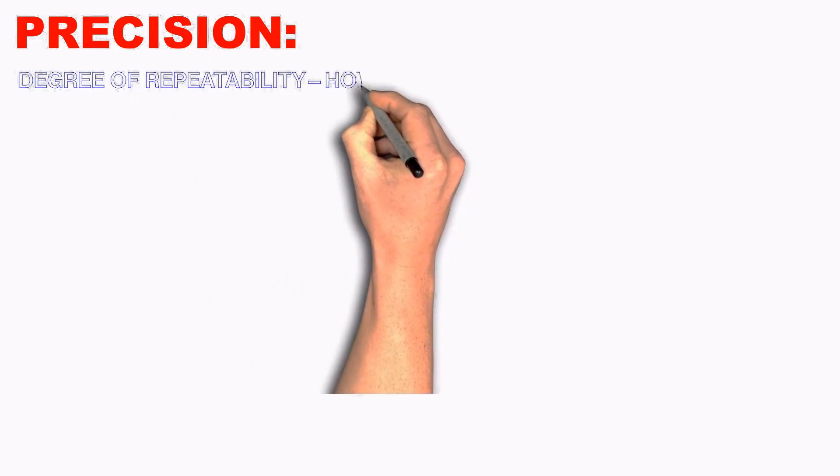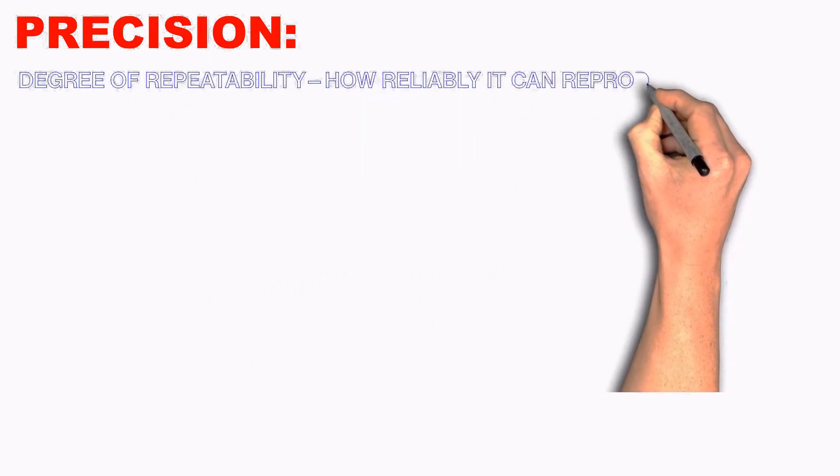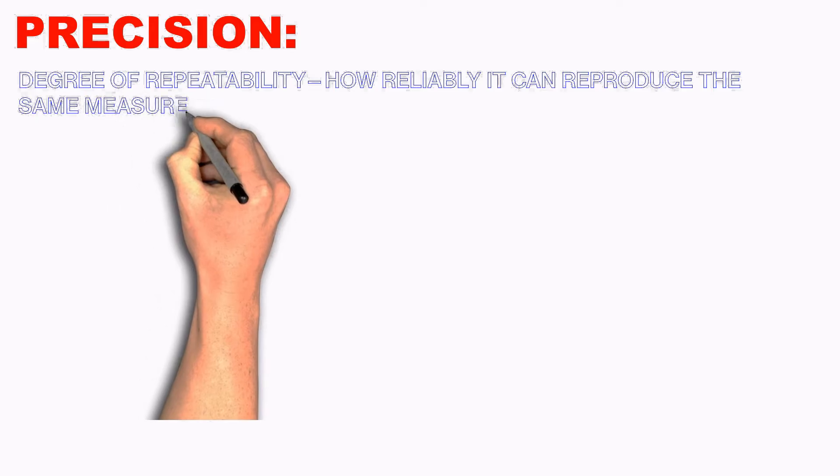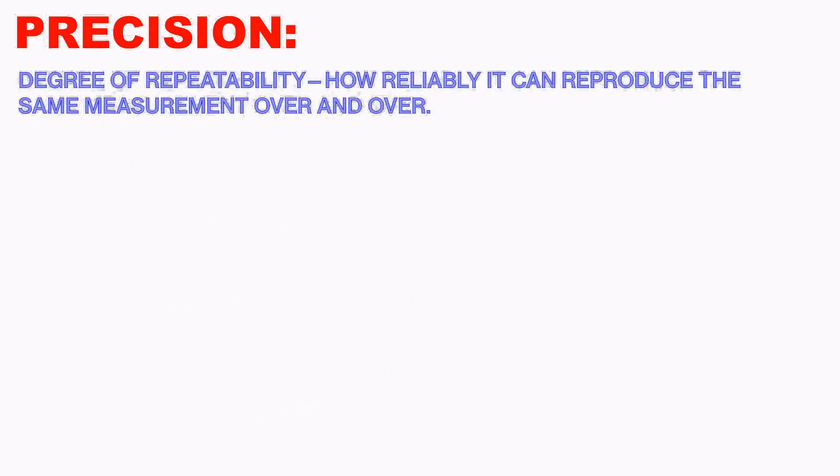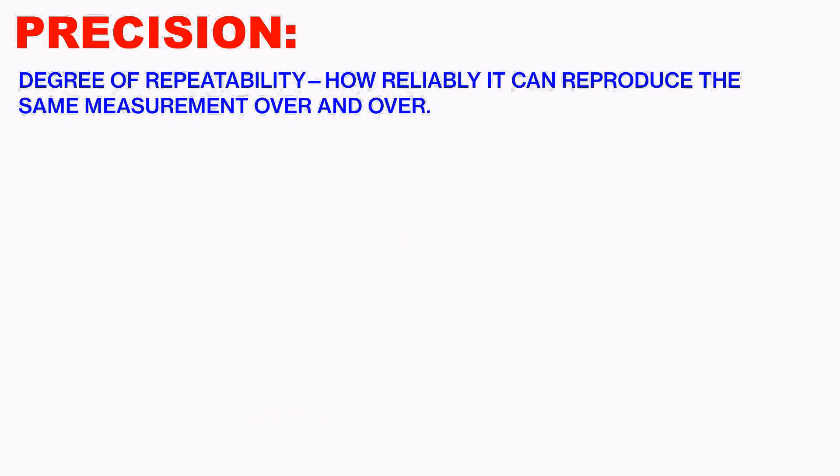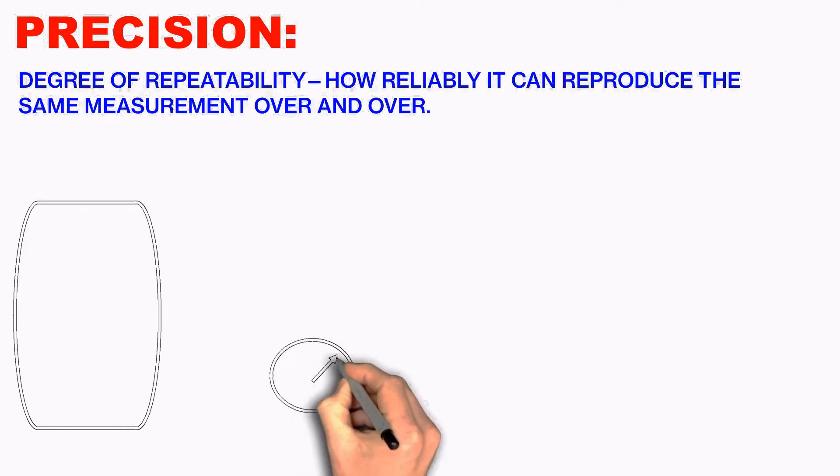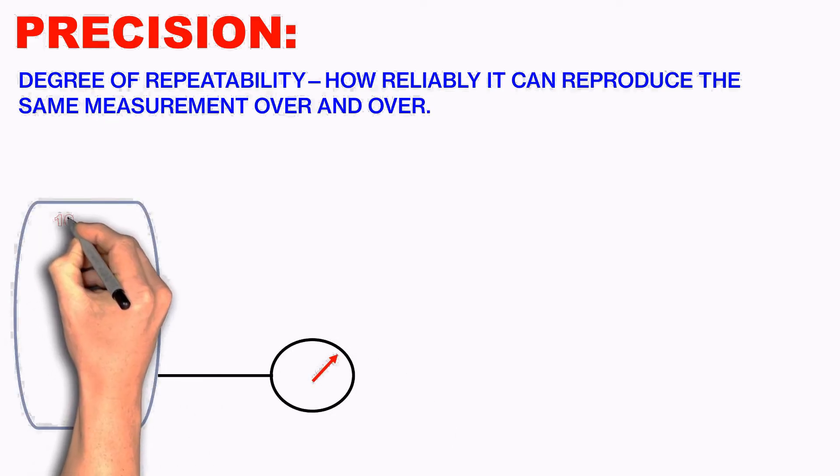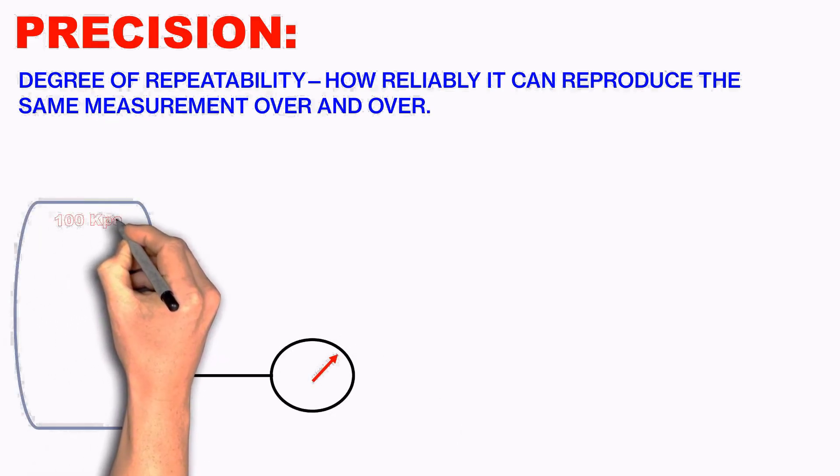So what is basically precision? It's an instrument's degree of repeatability. How reliably it can reproduce the same measurement over and over again. For example, you have a 100 kPa pressure which is indicating in the vessel. Now I am venting the pressure and it comes to 0.